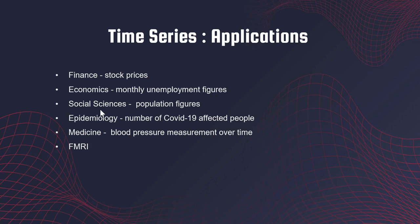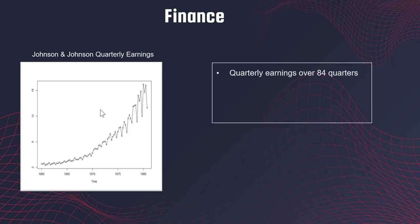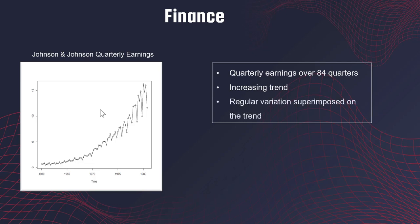In finance, what I have here is the quarterly earnings of Johnson and Johnson — 84 quarters. Time is on the x-axis and earnings on the y-axis. We can see there is an increasing trend, so earnings are growing over time. But we can also see some kind of periodic variation alongside this increasing trend.